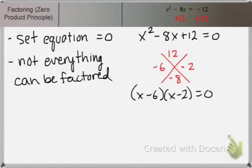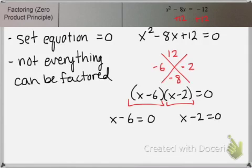And then we use our principle of zero product property, or our zero product principle. We set each factor equal to zero separately to find our two answers. So we get x equals 6 and x equals 2.